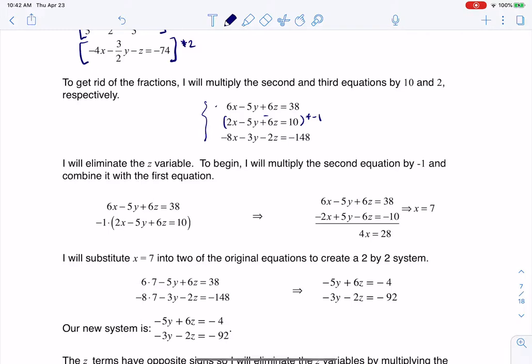If you combo the first and second equation, the second equation after you've multiplied it by negative 1, not only do the z's eliminate, but the y's do also. So that's awesome when you get that 2 for 1.